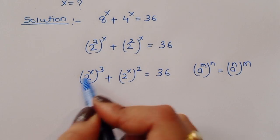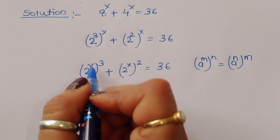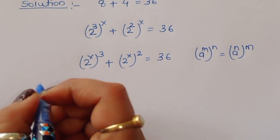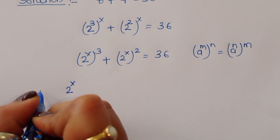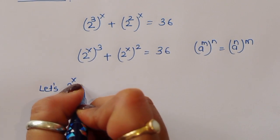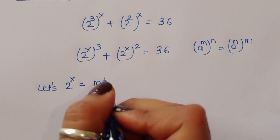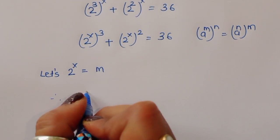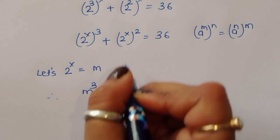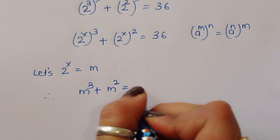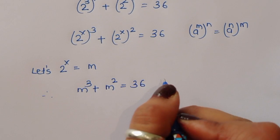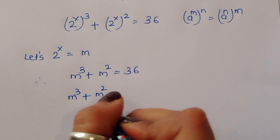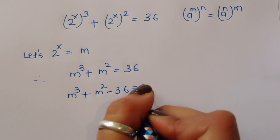Now let's consider 2^x = m. Therefore we can write m³ + m² = 36, which gives us m³ + m² - 36 = 0.